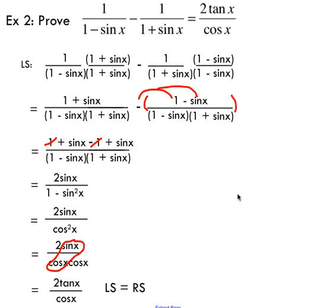That was a messy trig identity problem. But you're going to have to kind of get used to seeing things like this. But really what this boils down to is just finding a common denominator, simplifying, applying that Pythagorean identity, and then just doing a little bit of creative rewriting of that sine x over cos x.